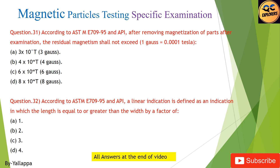Question 32: According to ASTM E709-95 and API, a linear indication is defined as an indication in which the length is equal to or greater than the width by a factor of: (A) 1; (B) 2; (C) 3; (D) 4.